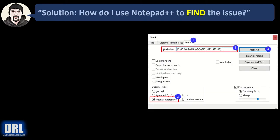So how do you use Notepad++ to find the issue? Using the Find dialog — Control-F to bring it up — go to the Mark tab at bullet number one, and then at bullet number two, click on regular expression. We're going to see in a minute how to derive this regular expression, but just copy-paste this value in from the YouTube description. Then you click Mark All, and it'll go through the document and highlight all instances of characters that are in the red zone from the prior screen.